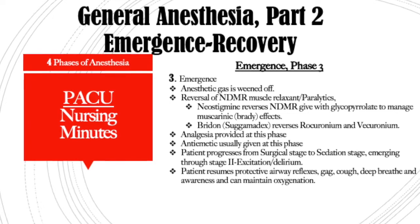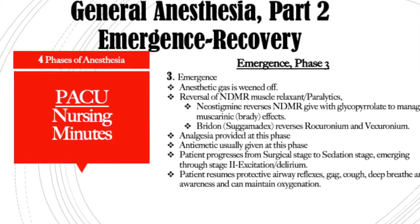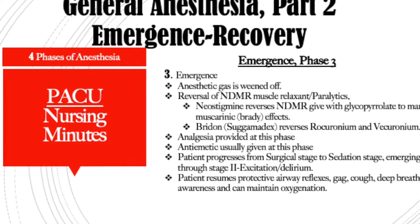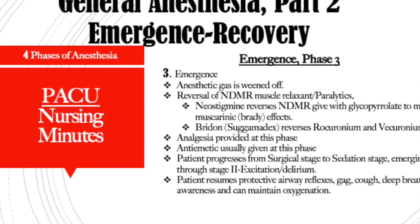Also during the reversal phase of emergence, they will give an analgesic, usually some fentanyl. They will also give an antiemetic, usually Zofran, and usually some dexamethasone. As the patient begins to awaken, their neuromuscular blockade will be weaned off. They'll have a four out of four on their train of four, and they will begin to awaken and resume their protective reflexes like their gag, cough, and swallow.